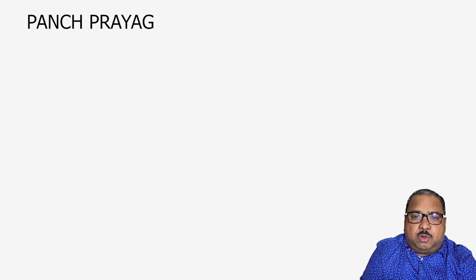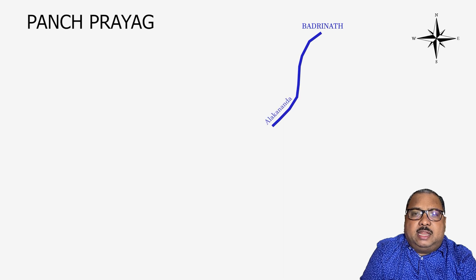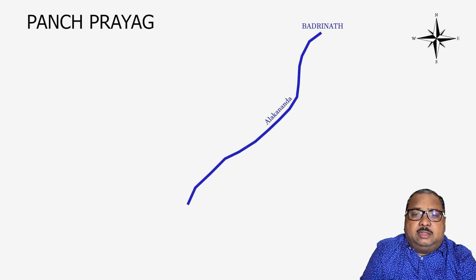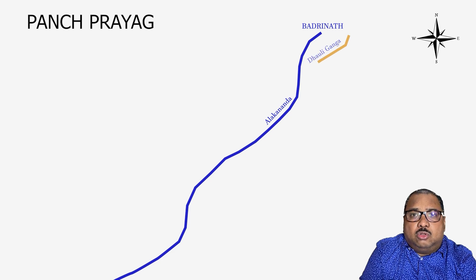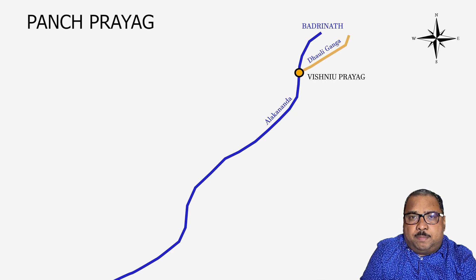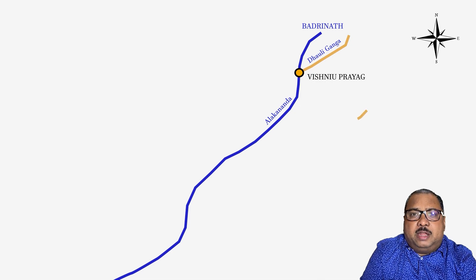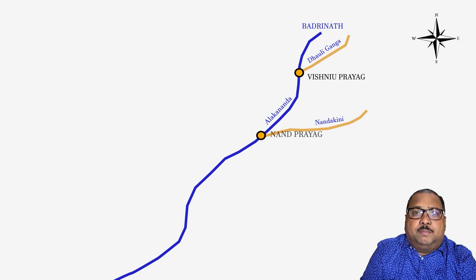Alaknanda originates from Satopanth glacier near Badrinath. Throughout its journey from Badrinath to Devaprayag, five different rivers meet Alaknanda at five different places. These places are known as Prayag. Let us see what those Prayagas are.